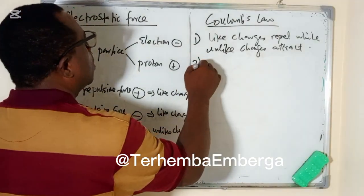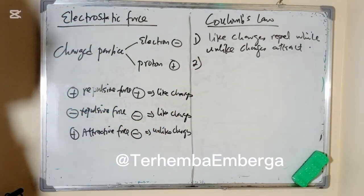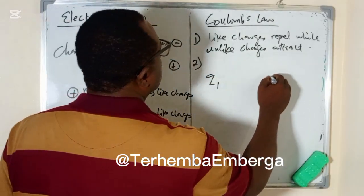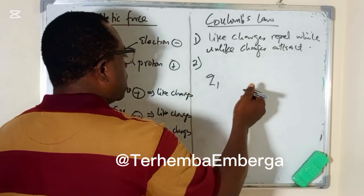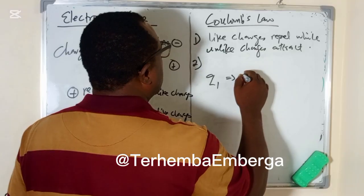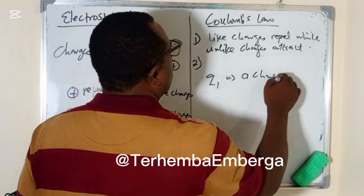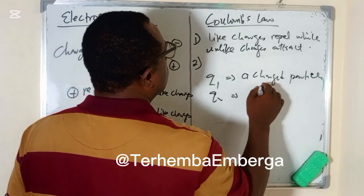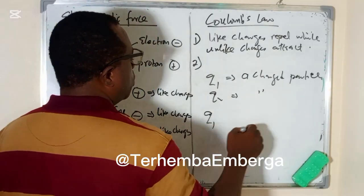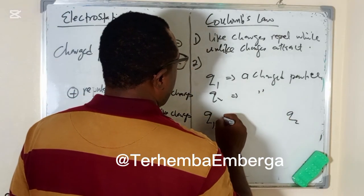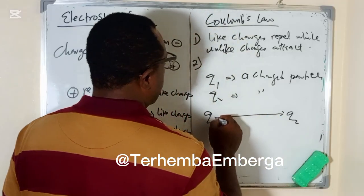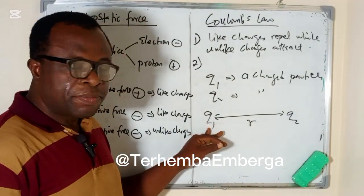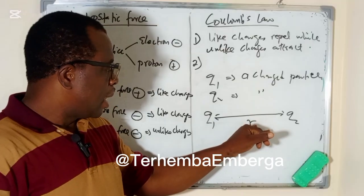Then the second part — before we go into it, let us describe the setup. If you have Q1 as a charged particle and Q2 as also a charged particle, represented as Q1 and Q2, and they are separated by a distance called R. So you have two charged particles Q1 and Q2 separated by a distance R.